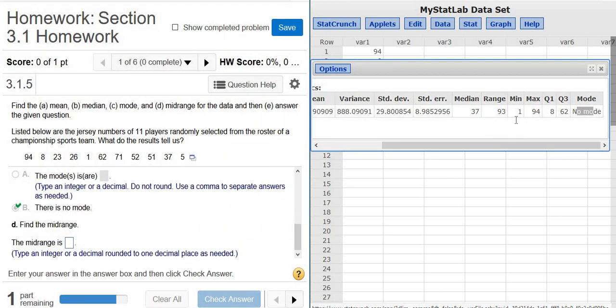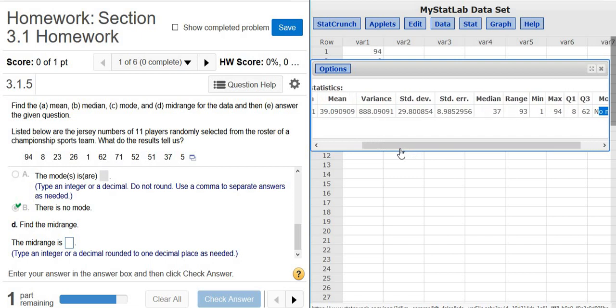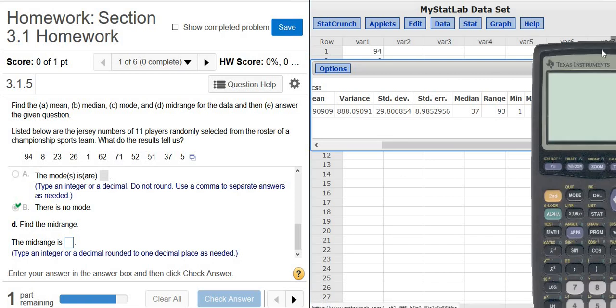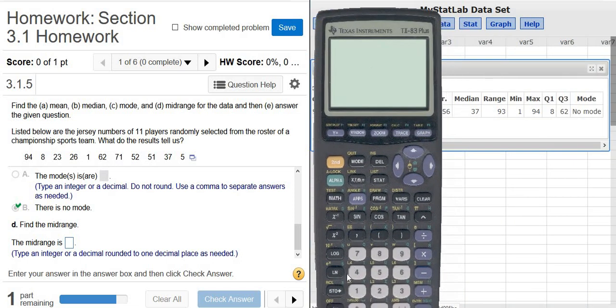Then the midrange. This does not give you the midrange. To find the midrange, you have to use the formula. It's max plus min divided by 2. In the calculator, let me turn it on.